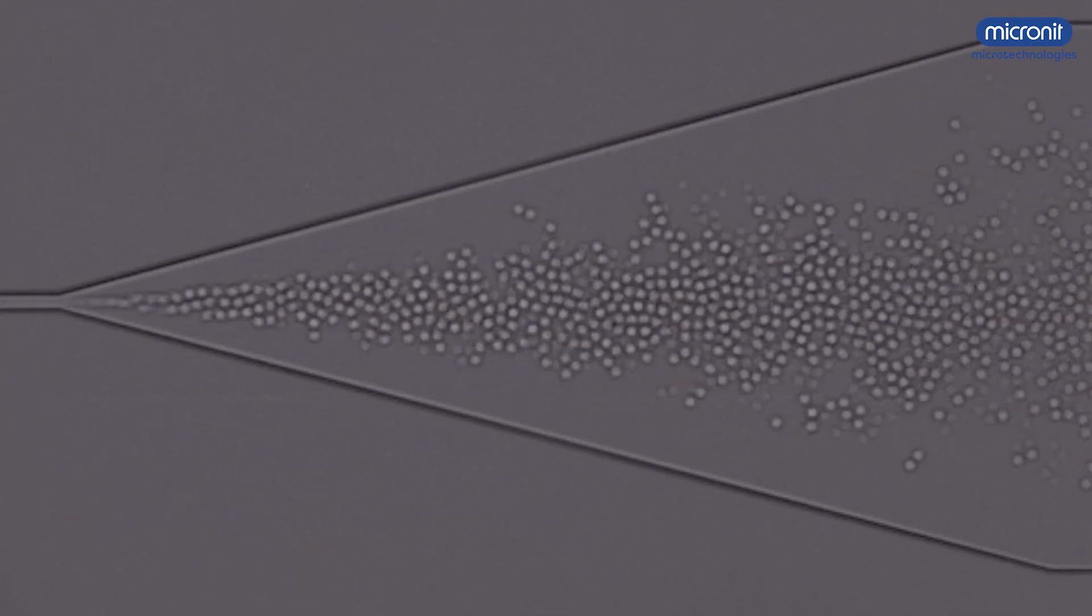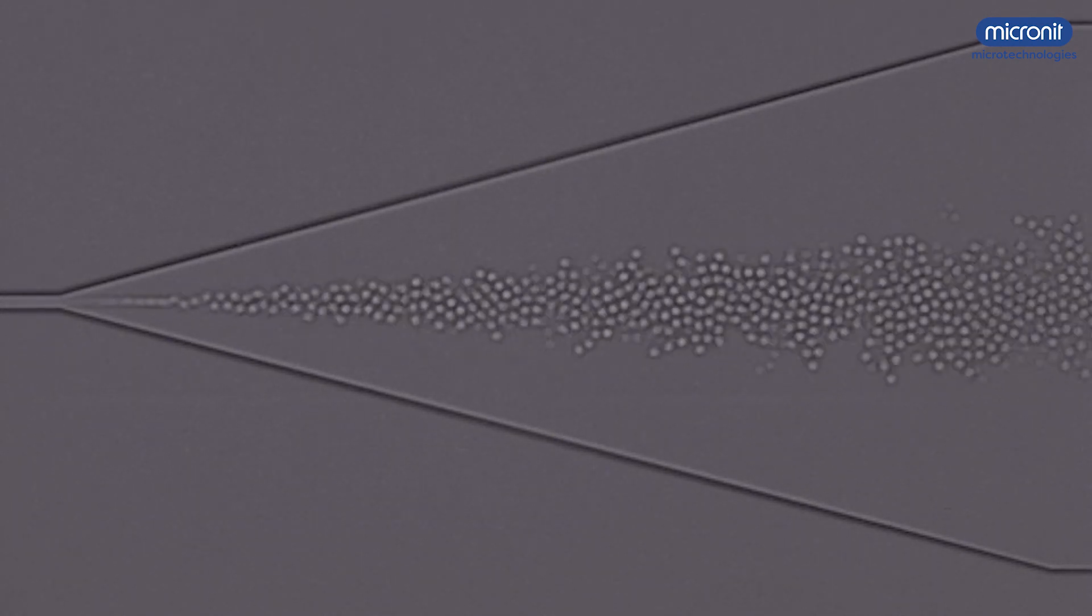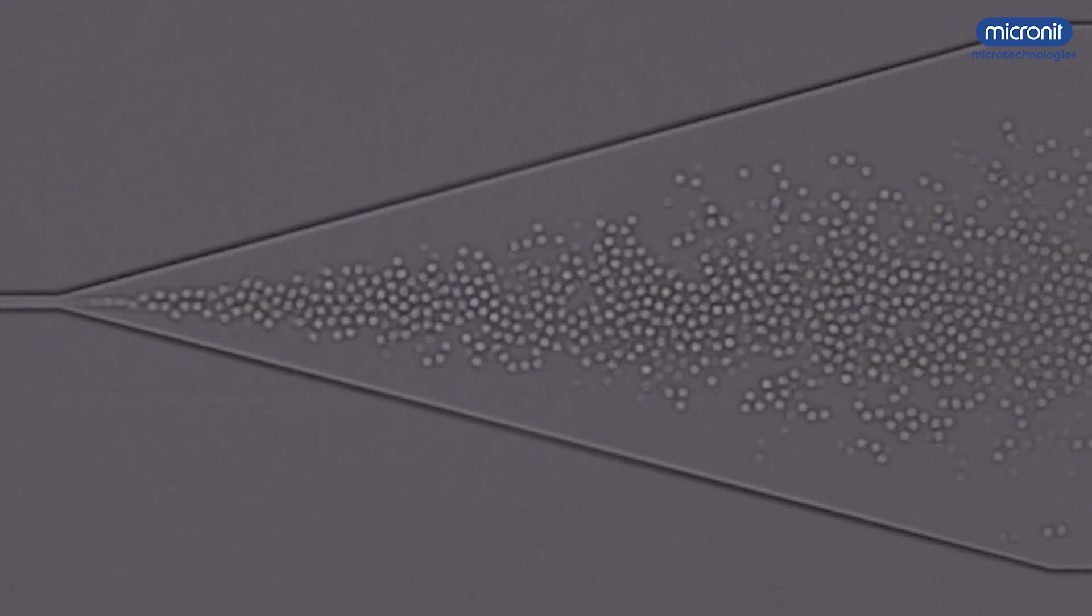By changing the flow rates or pressures of your two liquids, you can control how fast the droplets are produced and you can influence their size.